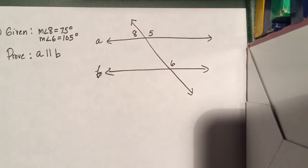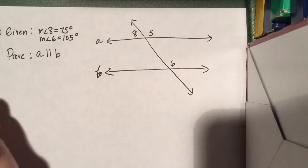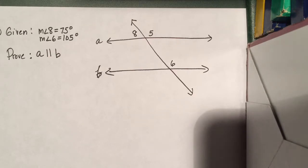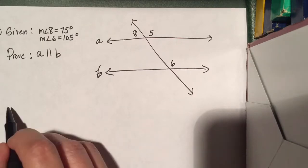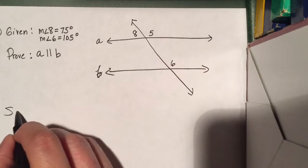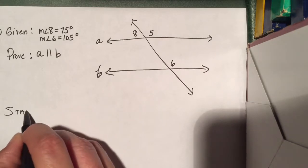So our third proof, we're actually going to work in a little bit different direction than we've been going. We've been working off of the assumption that the lines are parallel, and now we're going to prove the lines are parallel. So let's start off with our statements and reasons.